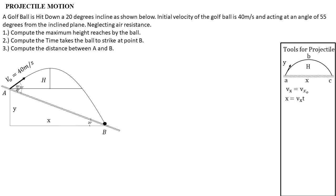Next formula: X is equal to Vx times T. Since the horizontal component is constant, we just multiply it by time. The next formula is X equals V squared sine 2-theta over G. This X is the distance from A to C, provided that A and C are at the same level. Given the velocity and the angle of release, we can directly compute X — but only when A and C are at the same level.